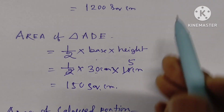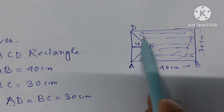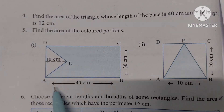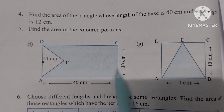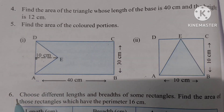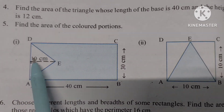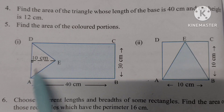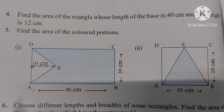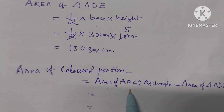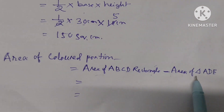Now we have to find the colored portion. The area of the colored region equals the area of rectangle ABCD minus the area of triangle AD: 1200 minus 150 equals 1050 square centimeters.